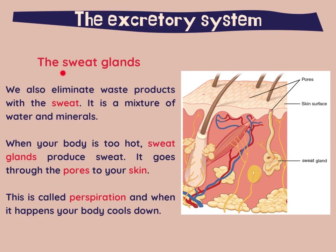Let's have a look at the sweat glands. We also eliminate waste products with sweat. It is a mixture of water and minerals. When your body is too hot, sweat glands produce sweat. It goes through the pores to your skin. This is called perspiration, and when it happens, your body cools down.